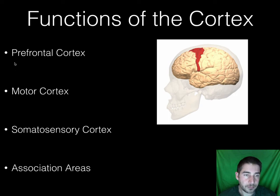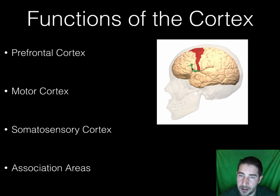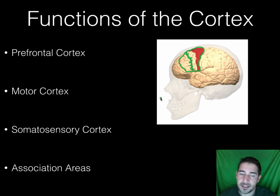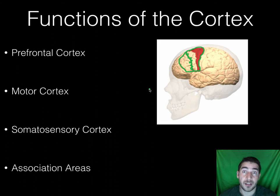There are different cortices within these lobes. The prefrontal cortex is in front of the frontal lobe. The prefrontal cortex handles planning and complex behavior, personality, decision-making, and moderating social behavior. As mentioned with Phineas Gage, he lost a lot of his social behavioral norms after part of his prefrontal cortex was damaged in the railroad spike accident. So the prefrontal cortex is a huge part of making you who you are.